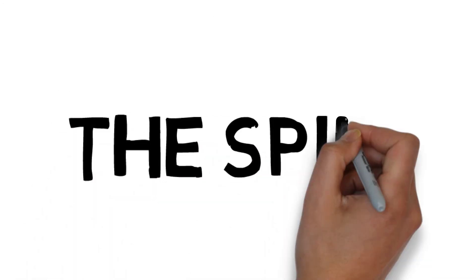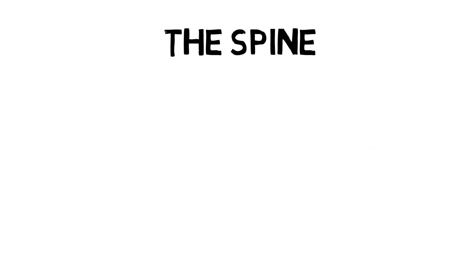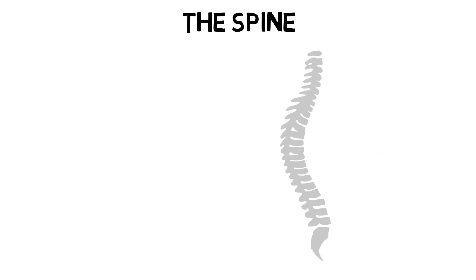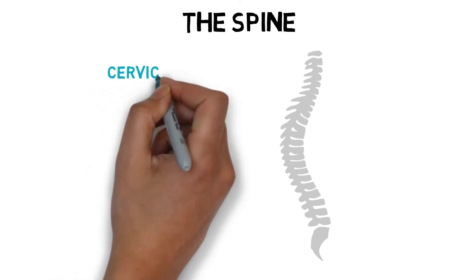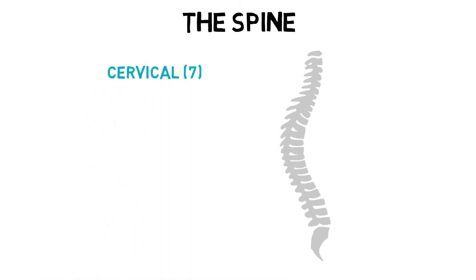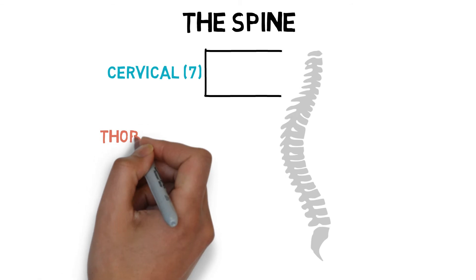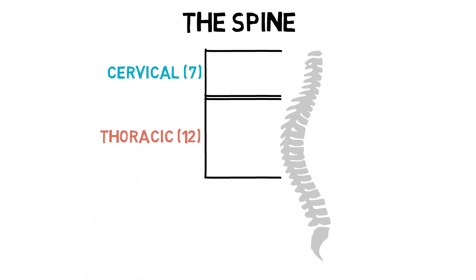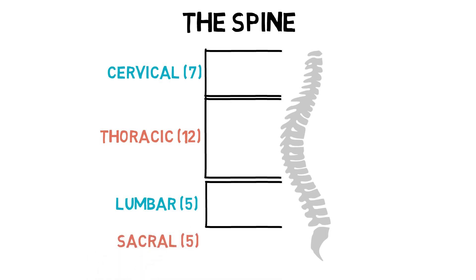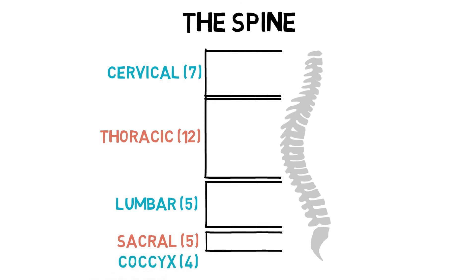The vertebral column is a unique set of 33 bones called vertebrae that house and protect our spinal column. Seven vertebrae make up the cervical curve. Twelve make up the thoracic curve. Five make up the lumbar curve. Another five make up the sacral curve, which are fused together. And finally, another set of fused vertebrae that consist of only four vertebrae make up the coccyx, or tailbone.